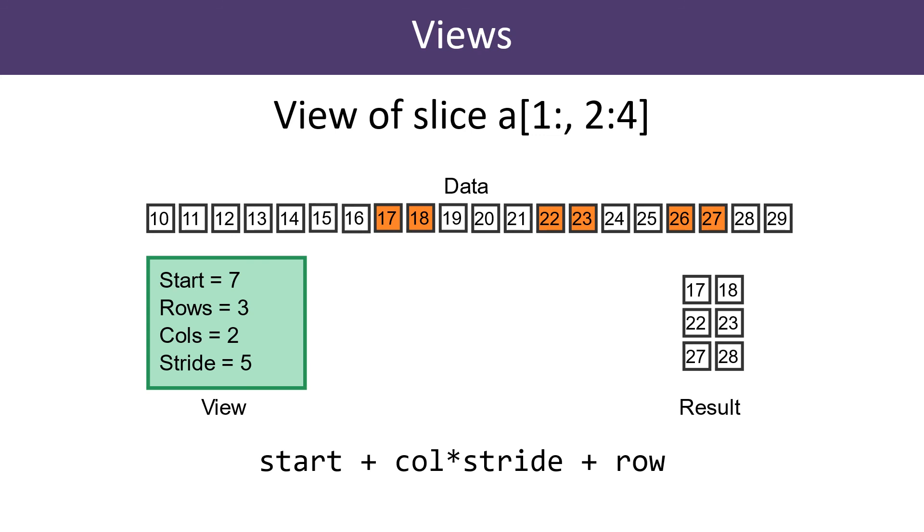In this view, the first row starts at position 7 in the data block. The slice is three rows and two columns, but importantly the stride is still 5.